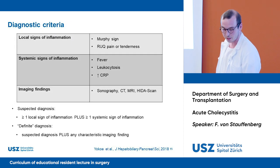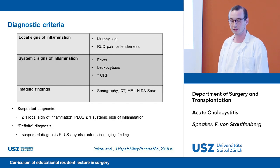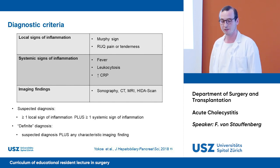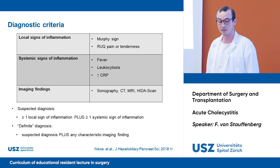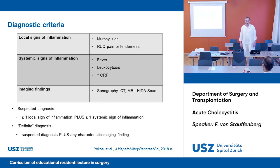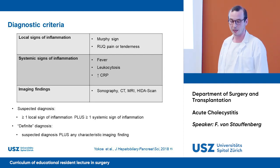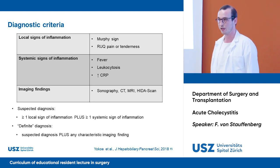The diagnostic criteria for acute cholecystitis include local signs of inflammation — positive Murphy sign and right upper quadrant pain or tenderness — as well as systemic signs of inflammation such as fever, leukocytosis, and rise of CRP, and imaging findings using sonography, CT, MRI, or HIDA scan. We can state a suspected diagnosis if there is one or more local signs plus one or more systemic signs, and a definite diagnosis if we add any typical imaging finding.